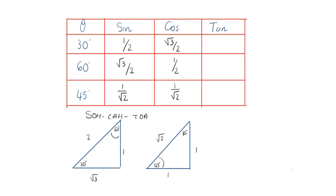Now for tangent — tan is opposite over adjacent. Tan of 30° is 1 over √3. Tan of 60° is opposite over adjacent, which is √3 over 1, so √3. Tan of 45° is opposite over adjacent, which is 1 over 1, so that equals 1.